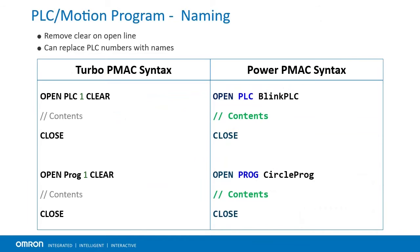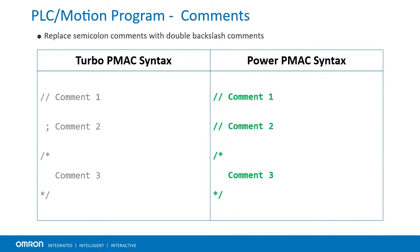In Turbo PMAC, all PLCs were numbered. In Power PMAC, named PLCs are preferable. Change all PLC numbers to names, including calls to enable and disable PLCs. Numbered PLCs are still allowed, but named and numbered PLCs should not be mixed in the same project. Also, remove the word 'clear' on the open PLC name line. Turbo PMAC allowed semicolon, double backslash, and multiline comments. Power PMAC allows double backslash and multiline comments. Replace semicolon comments with double backslash comments.